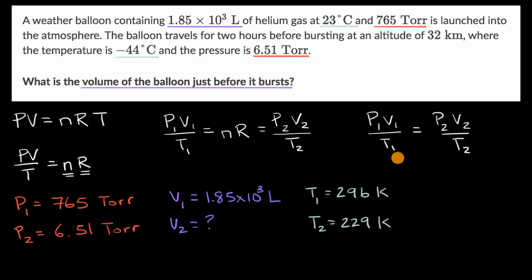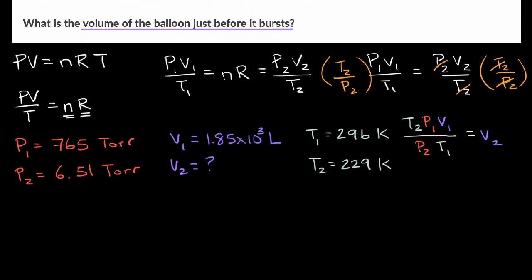In fact, we could solve for V two before we even put in these numbers. If we multiply both sides of this equation times T two over P two. And the reason why I'm multiplying it times this is so that this cancels with this, this cancels with that. So I have just V two on the right-hand side. Of course, I have to do that on both sides. T two over P two. I am going to get, and I'll now color code it. I'm going to get that T two times P one times V one over P two times T one is equal to V two. So we just have to calculate this right now. Let me give myself a little bit more real estate with which to do it.